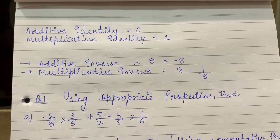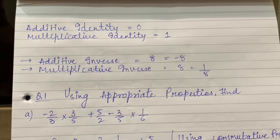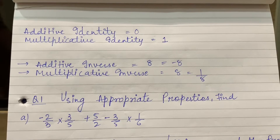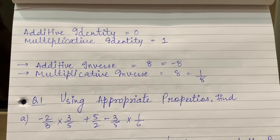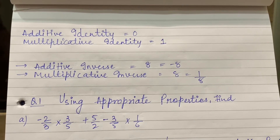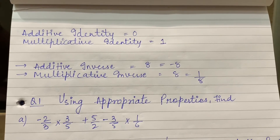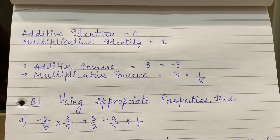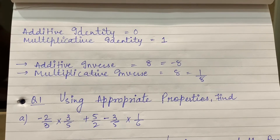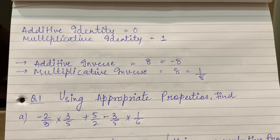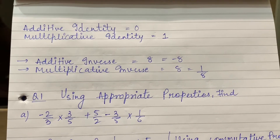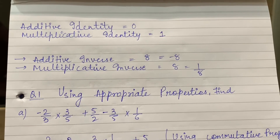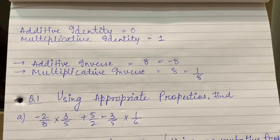Additive Identity and Multiplicative Identity. Now, identity means that you should look the same — your identity does not change. What is the identity of a person? If he stays the same, it means his identity is preserved. In addition, I will add a number such that the number will remain as it is. Like, if I add which number with 5 so the identity will not be changed, it will remain as it is.